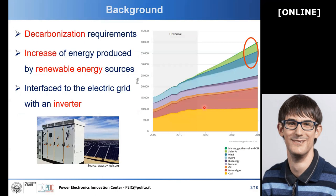As you may all know, we are now facing some decarbonization requirements. This means that we are phasing out traditional generation such as coal-based or oil-based, towards renewable energies, and in particular wind and solar power. These sources are quite promising because the technology is becoming more and more mature, and they are interfaced to the electric grid by using a power electronics converter — so, an inverter basically.